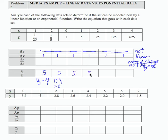25 over 5 is 5. 125 over 25 is 5. 625 over 125 is 5. So that means that my data are exponential and my b value is 5.